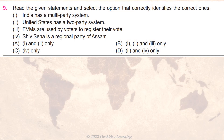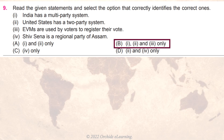Read the given statements and select the option that correctly identifies the correct ones. Statement 1: India has a multi-party system. Statement 2: United States has a two-party system. Statement 3: EVMs are used by voters to register their vote. The answer is B — statements 1, 2, and 3 only.